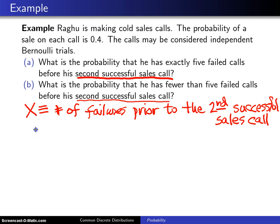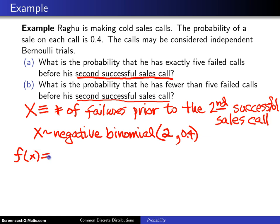In this case, X will have the negative binomial distribution, and we have to figure out what the parameters should be. In general, the parameters are r and p. Since we are looking for the second successful sales call, r will be 2, and the probability of success on each trial is 0.4. From that we can write down f(x), the probability mass function.